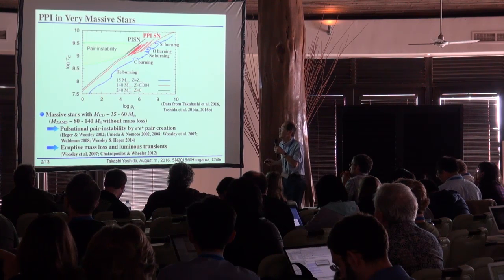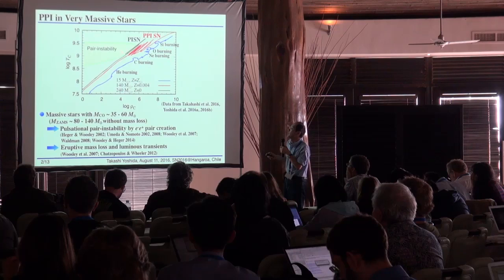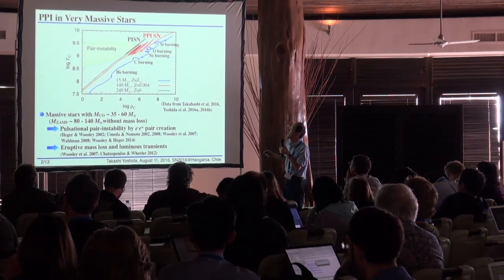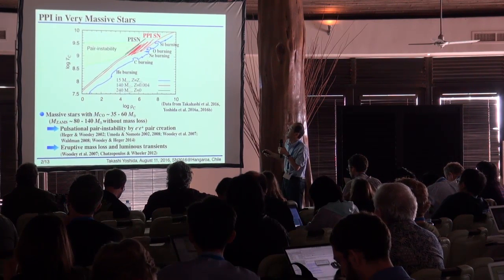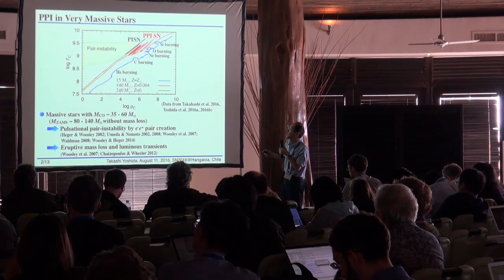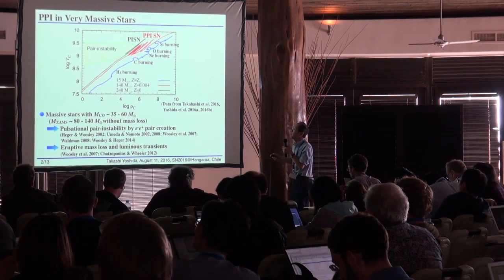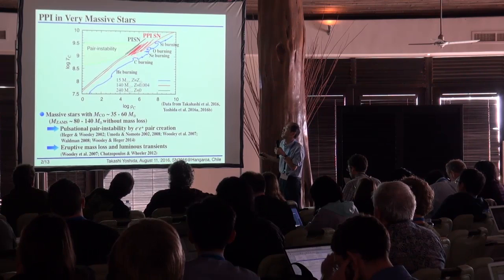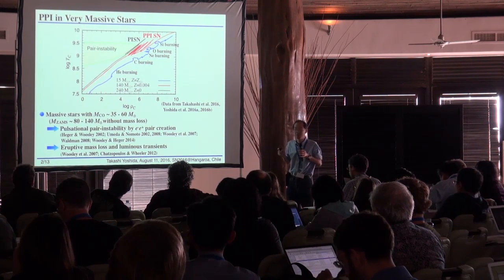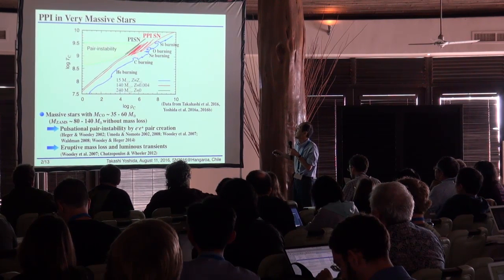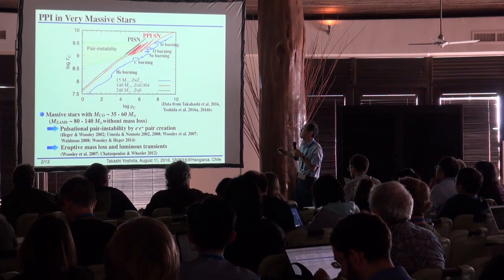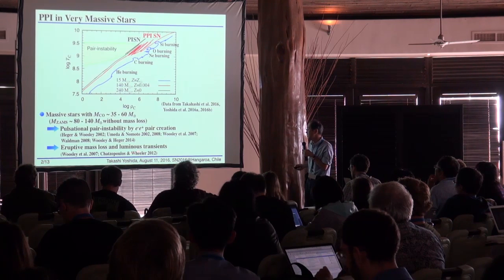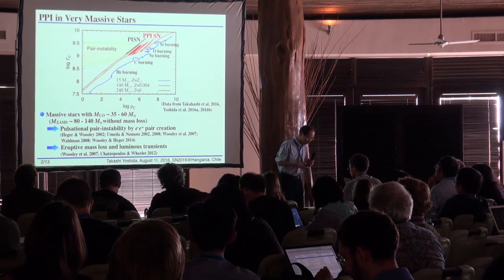Talking about pair instability, if pair instability works the star contracts with higher than hydrostatic timescale. As a result, the star burns and expands but does not explode. The star expands but pulsates like this, and in this stage erupted mass loss and luminous transients are generated by this process.